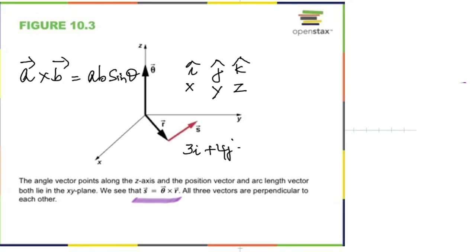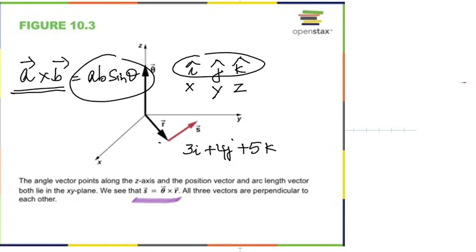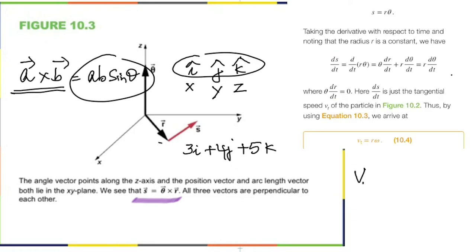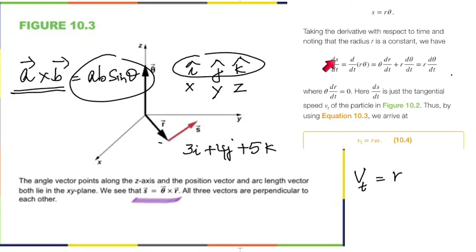If you do dS/dt, wouldn't you be doing d/dt of R·theta? Because S equals R·theta. But whenever you use calculus with a product, if both are variables, you use the product rule — keep one constant and take the derivative of the other, then switch.